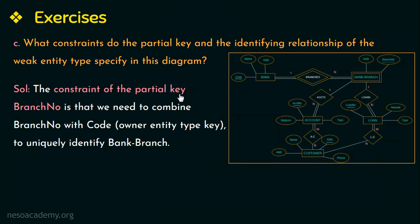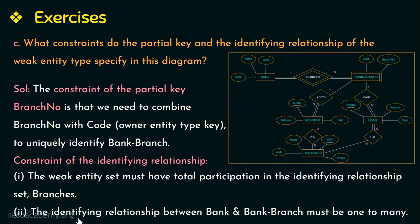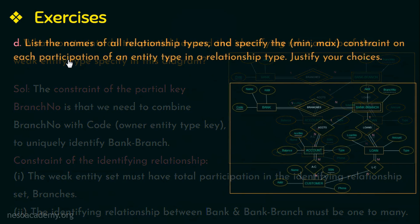The next constraint is that the weak entity type must have total participation in the identifying relationship set 'branches'. As shown in the diagram, bank branch must participate totally in 'branches'. Additionally, the identifying relationship between bank and bank branch must be one-to-many, meaning a bank branch can have only one bank as its owner.